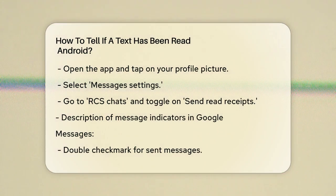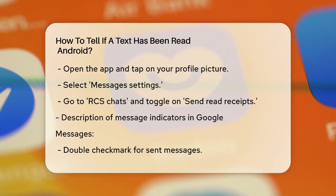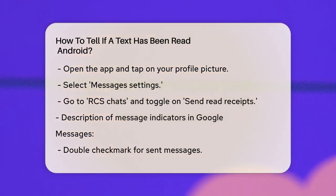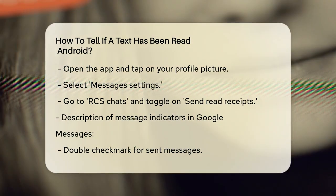When you send a message via RCS Chat, you'll see a double check mark when the message reaches the recipient's inbox. If the recipient reads your message, the double check mark will fill with color, indicating that the message has been read.